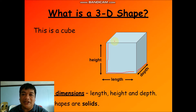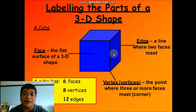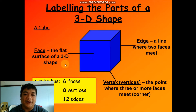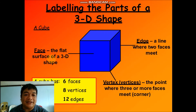3D shapes are also called solid figures. In labeling the parts of a solid figure or 3D shape, we have here an example of a solid figure — a cube. A cube has parts. The first part is the face. The face is the flat surface of a 3D shape.